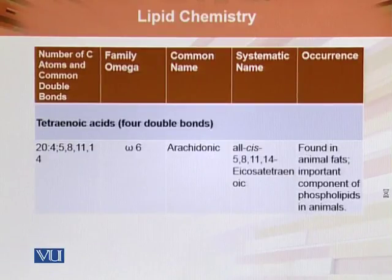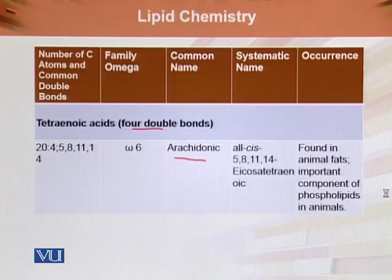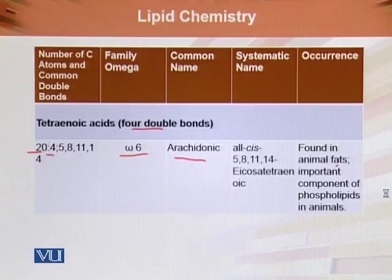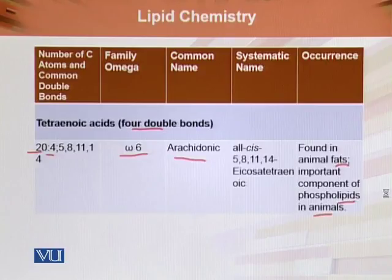Next is the tetraenoic acid with four double bonds, which is arachidonic acid. This is an omega-6 fatty acid, a 20-carbon compound with four double bonds, found in animal fats and an important component of phospholipids in animal cell membranes. Arachidonic acid is a precursor to eicosanoids, which are pro-inflammatory.